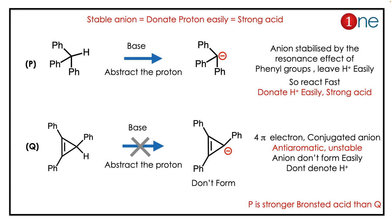For P, the anion with three phenyl groups is very stable. So what really happens is it leaves the H⁺ easily — it donates H⁺ easily — making it a strong acid. Now let us analyze Q.